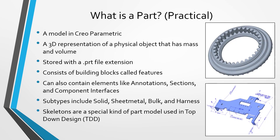First, let's talk about what a part is. In practical terms, it's a kind of model in Creo Parametric that represents a physical object, and it usually has mass and volume. In some situations you'll have parts that consist of all non-solid geometry — in other words, surfaces — and in those situations they do not have mass.